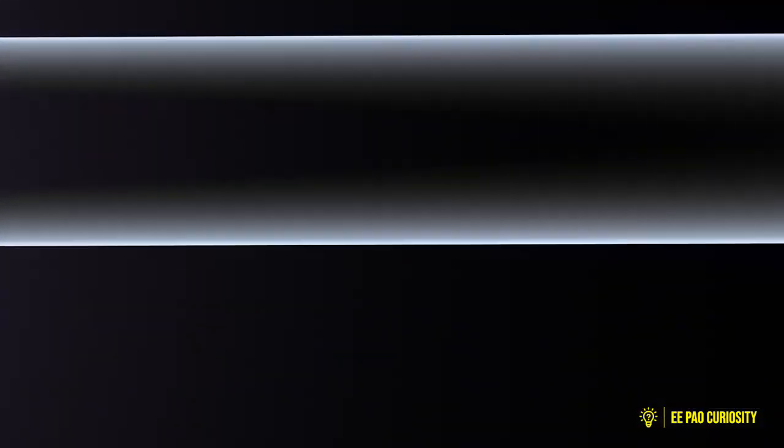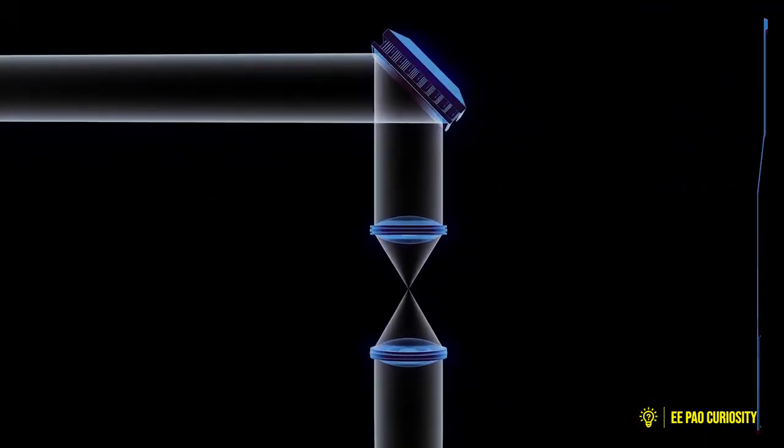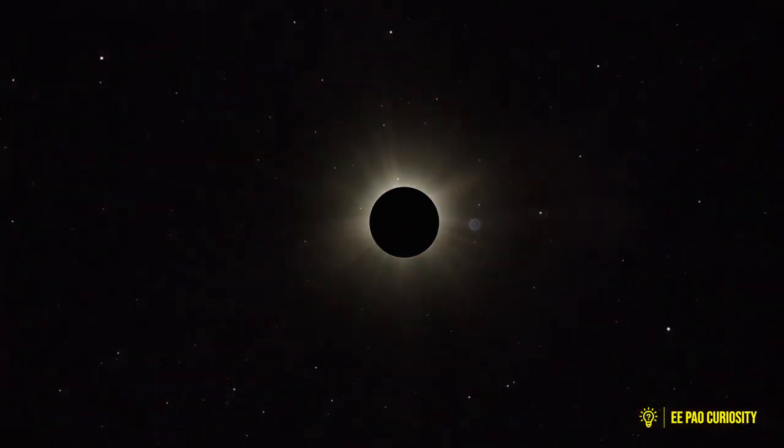The corona usually cannot be seen due to the bright light of the Sun's surface without using special instruments like the coronagraph. However, it can be seen during a total solar eclipse.